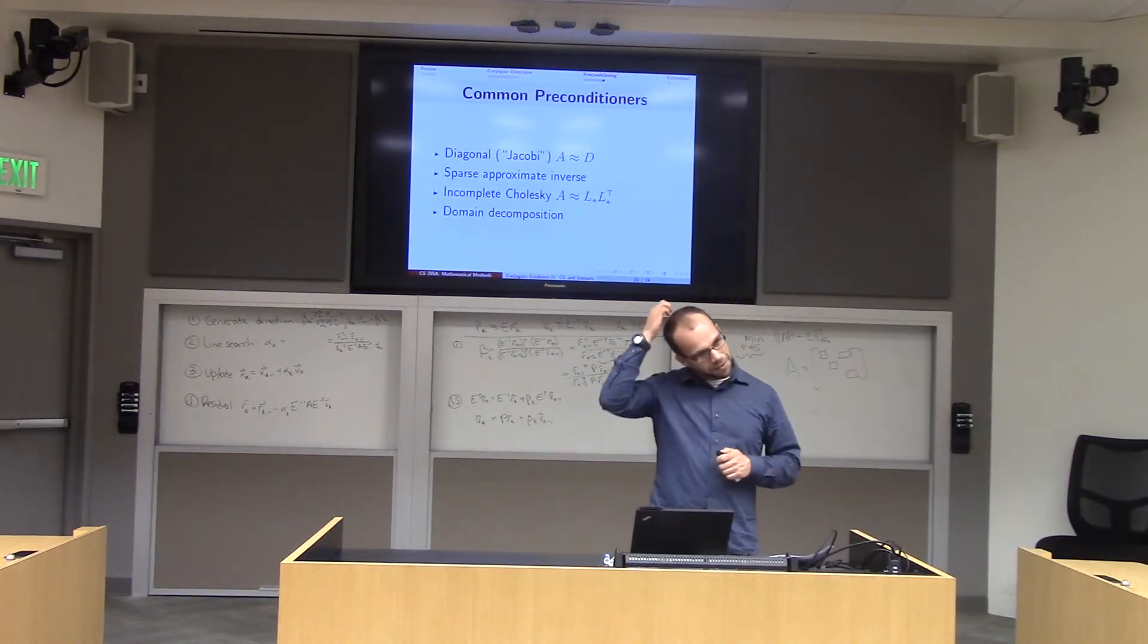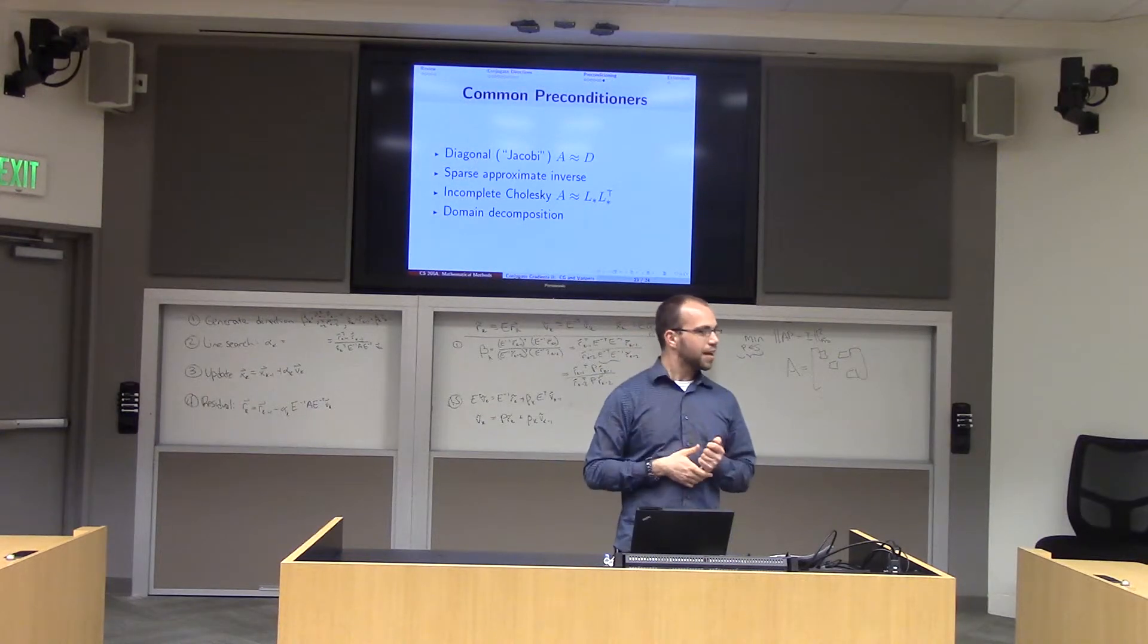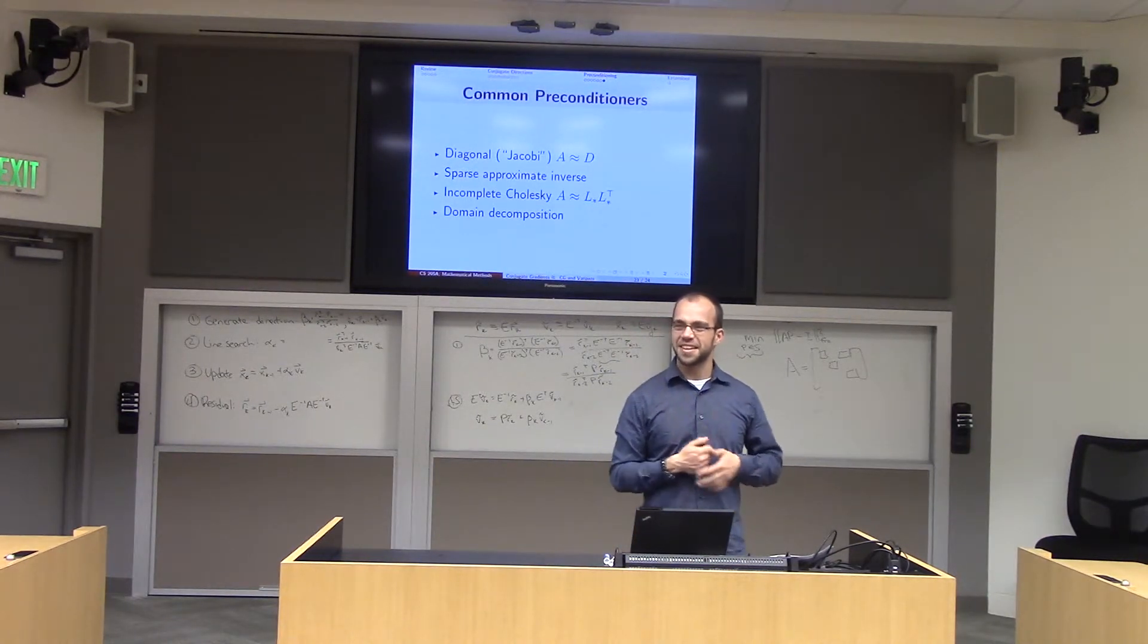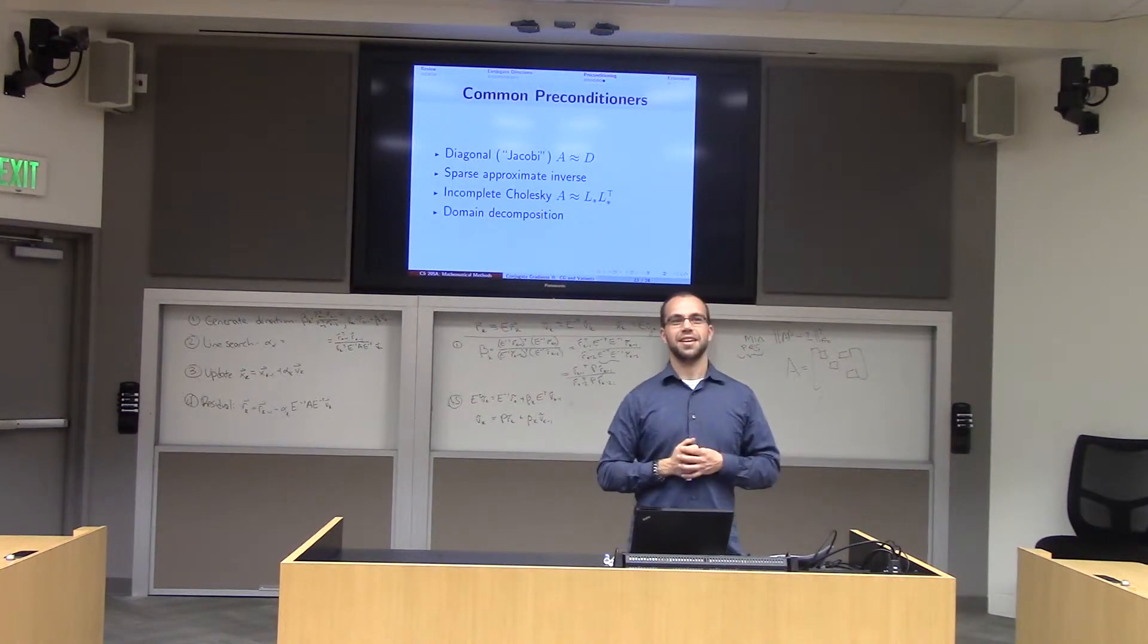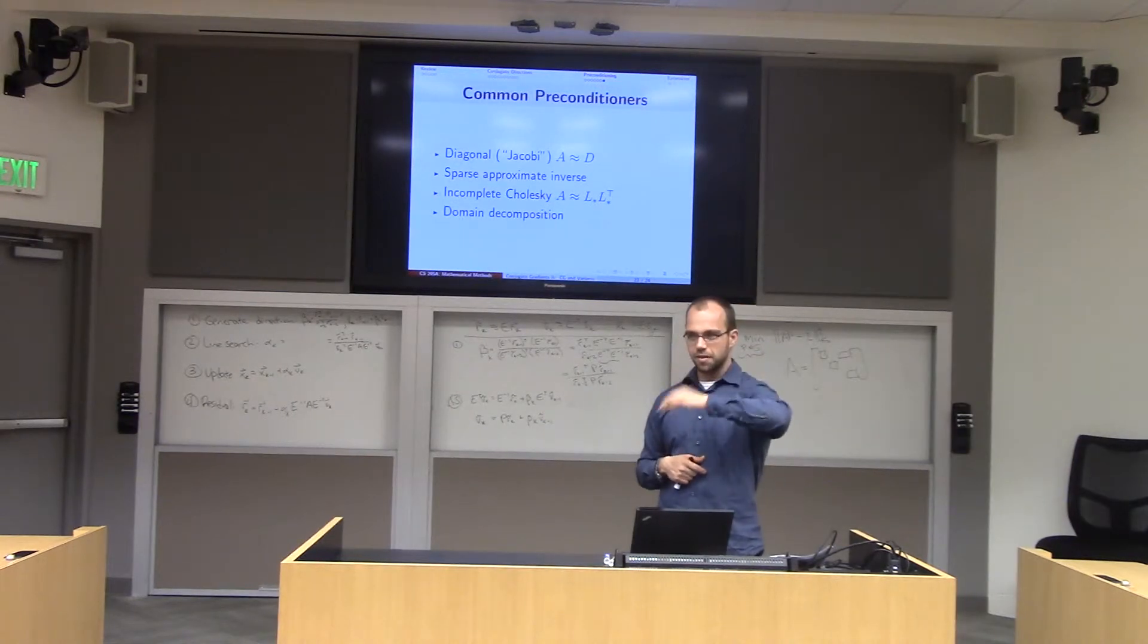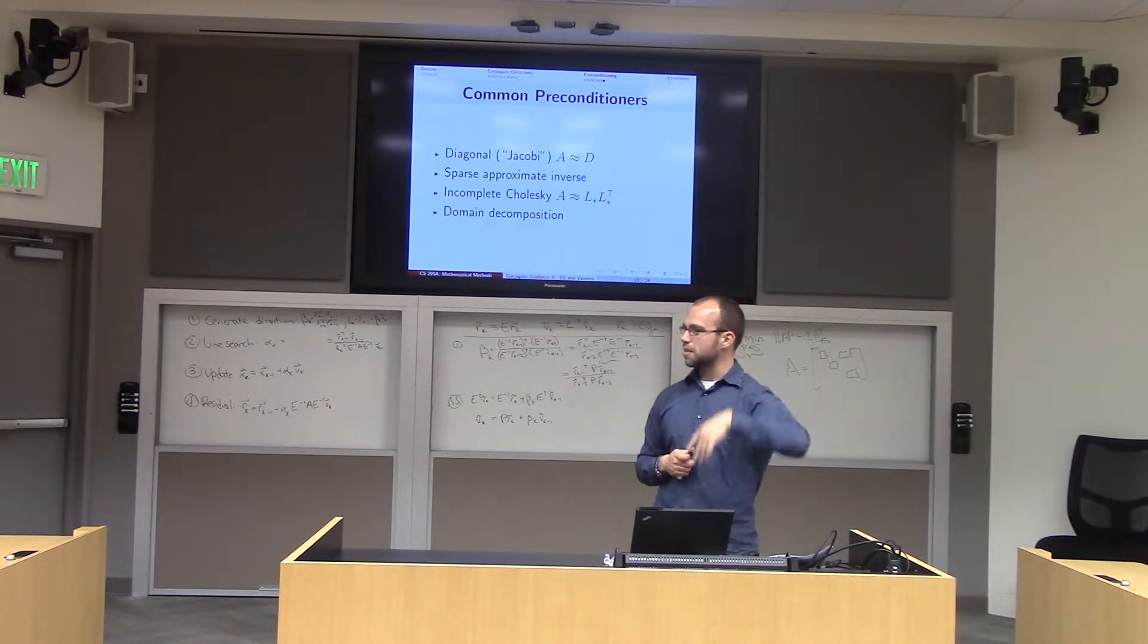In incomplete Cholesky factorization, what you do is you say, I'm going to pretend like I'm running the Cholesky factorization algorithm on my matrix A. If you look back, you can do this kind of by only looking at slots where there are non-zeroes to start with and then doing these backwards substitutions.